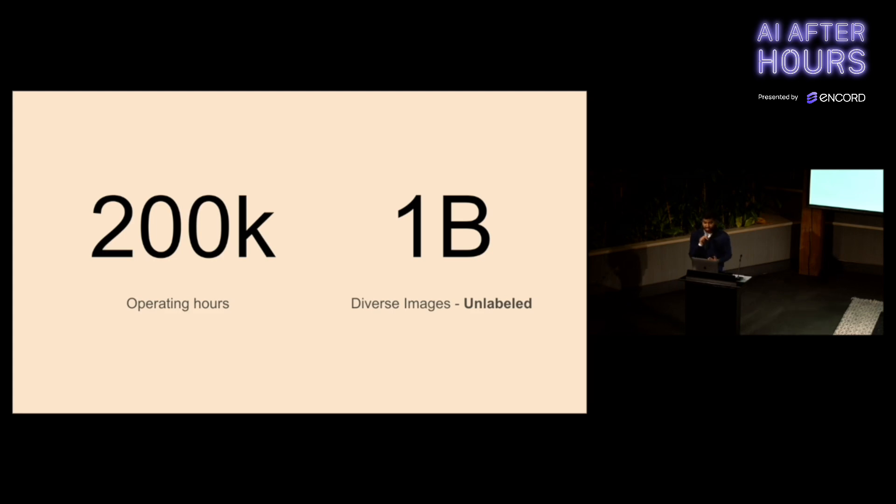Where do we start? We start with the data. At Ambi, we have a wealth of data. We have over 200,000 hours of operating data in production, which corresponds to over 1 billion diverse images. But the problem is these images are all unlabeled.